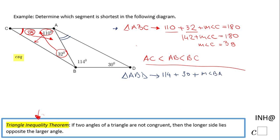We can combine 114 and 30, that will be 144, plus the measure of angle BAD equals 180. Now we can find the measure of angle BAD by subtracting 144, so that will be 36 degrees.